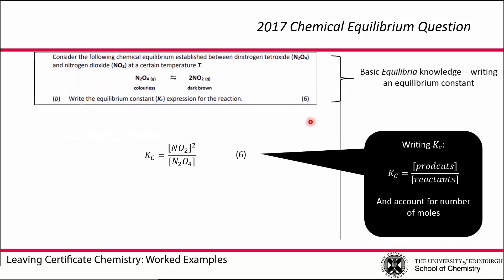The second part, question part b, is asking you to write the equilibrium constant Kc for the reaction. The equilibrium constant generally is the concentration of products divided by the concentration of reactants, taking into account the number of moles of each. In our reaction, the product is NO2, so we have [NO2] squared because there are two of them, divided by our reactant [N2O4]. That's a pretty easy six marks.